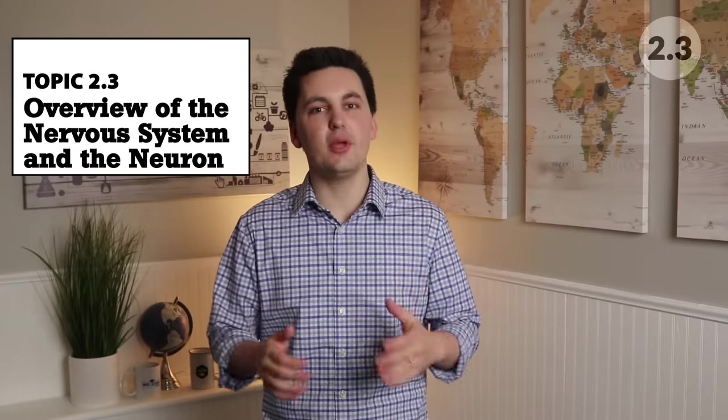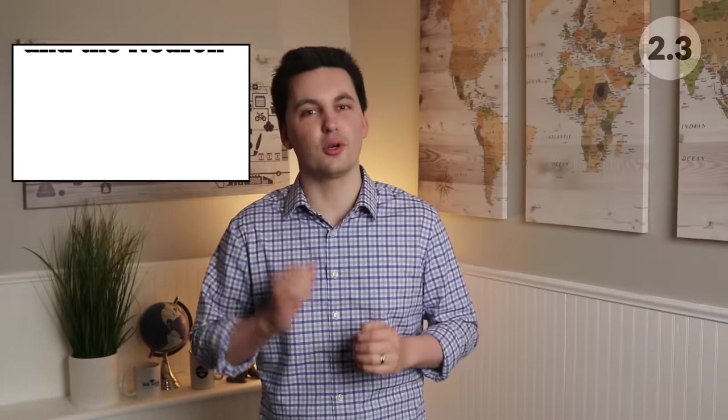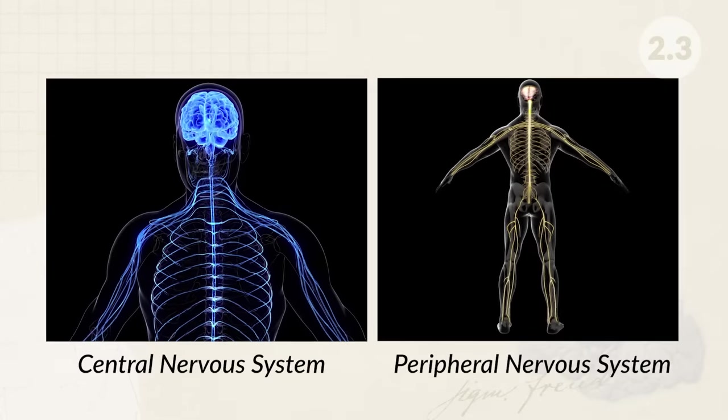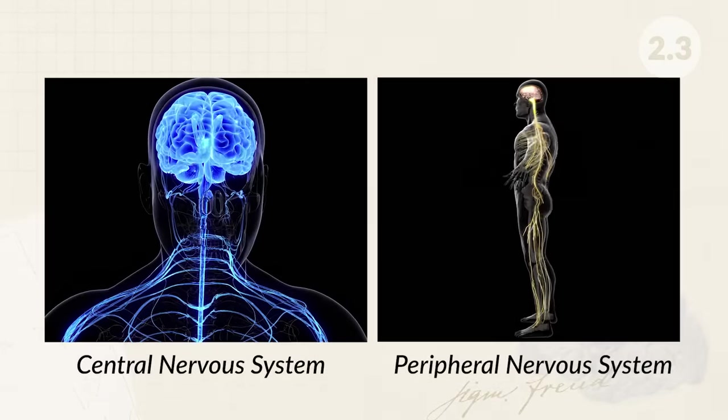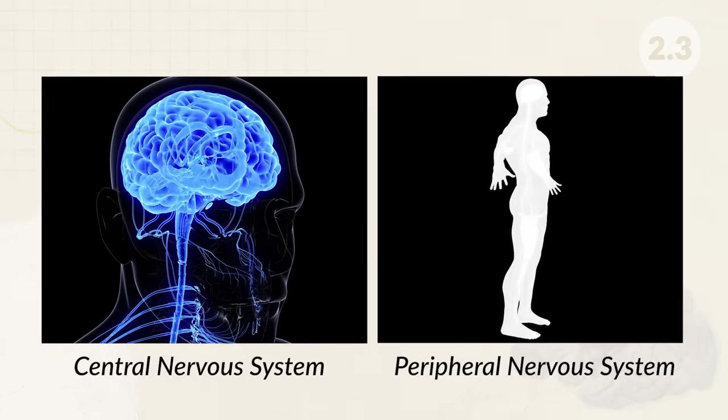Moving to 2.3, we have the nervous system, which is made up of the central nervous system and the peripheral nervous system. The CNS is made up of the brain and spinal cord — it sends out orders to the body — while the PNS consists of different nerves that branch off the brain and spine, allowing the nervous system to communicate with the rest of the body. The central nervous system sends messages through the peripheral nervous system to tell the body what to do, and the peripheral nervous system can send messages back to the central nervous system.